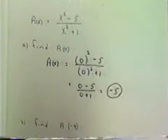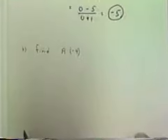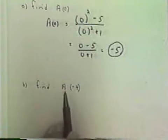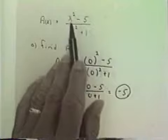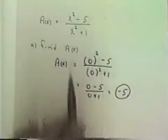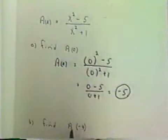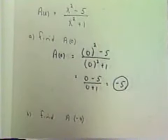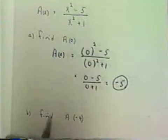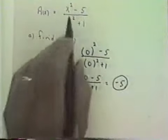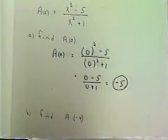To make sure you understand that function notation, let's evaluate the algebraic fraction x squared minus 5 over x squared plus 1 for x equal to negative 4. So what I need to do is, I need to replace x in the expression by negative 4.